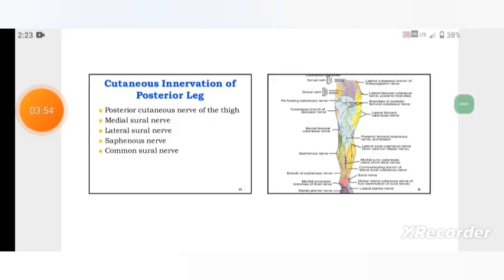Cutaneous innervation of posterior leg: posterior cutaneous nerve of the thigh, medial sural nerve, lateral sural nerve, saphenous nerve, common sural nerve.